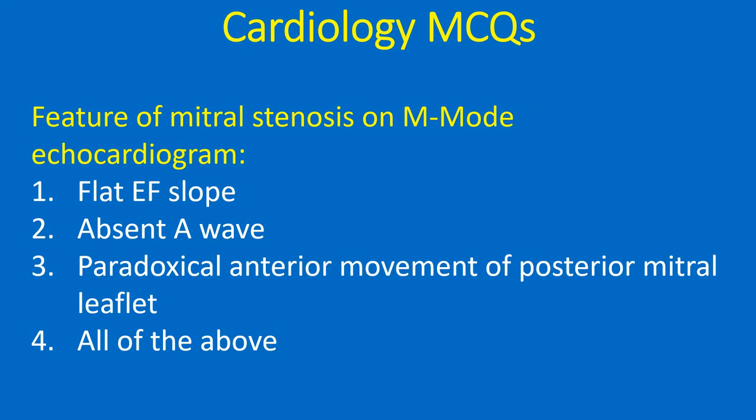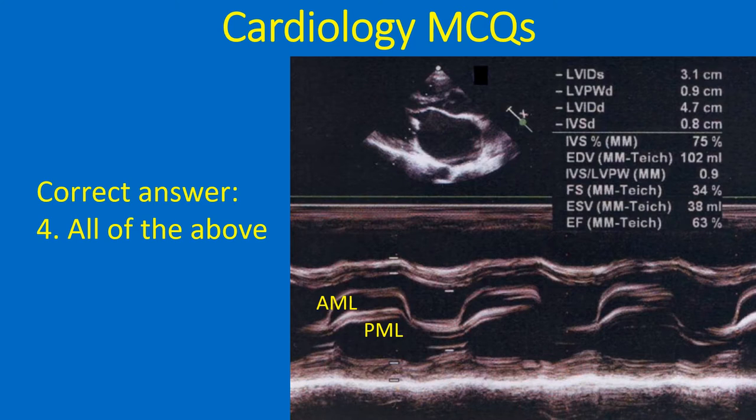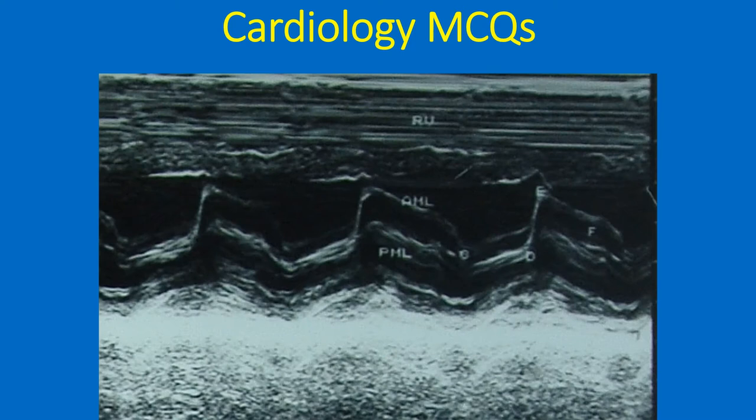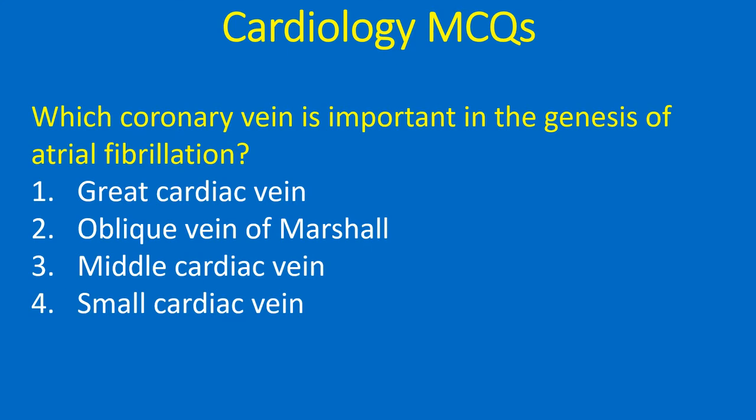Feature of mitral stenosis on M-mode echocardiogram: 1. Flat EF slope, 2. Absent A wave, 3. Paradoxical anterior movement of posterior mitral leaflet, 4. All of the above. Correct answer: 4. All of the above. Here is an M-mode echocardiogram in severe mitral stenosis showing flat EF slope, absent A wave, and paradoxical anterior movement of posterior mitral leaflet. Another M-mode echocardiogram shows reduced EF slope, absent A wave, and paradoxical anterior movement of posterior mitral leaflet in mitral stenosis.